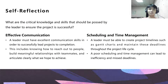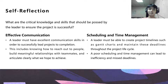What are the critical knowledge and skills that should be possessed by the leader to ensure the project is successful? Number one: effective communication. A leader must have excellent communication skills in order to successfully lead the project to completion. This includes knowing how to reach out to people, build meaningful relationships with teammates, and articulating clearly what we hope to achieve.